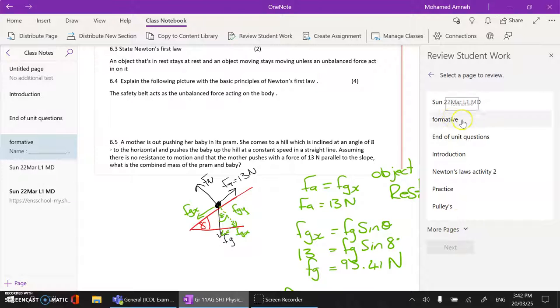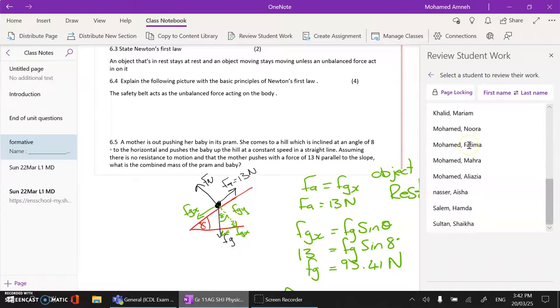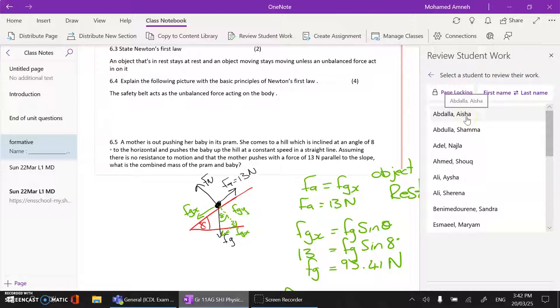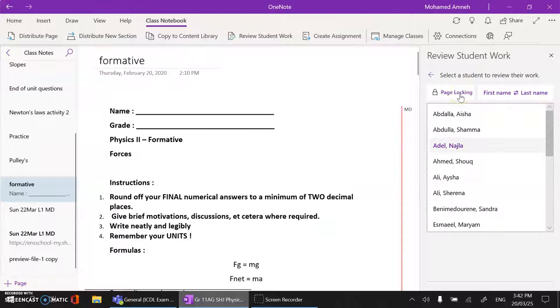Then I want to lock this one, Formative. Then I will hit Next. Then I can choose which student I want to lock from editing on this page. So if I'm finished with Aisha or Shama, I just click on it, then Page Lock, and she cannot edit on it. Thank you.